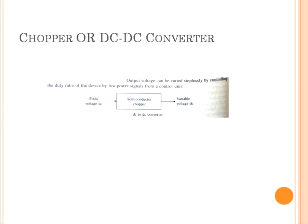Choppers or DC to DC converters are used to get variable voltage DC from a fixed voltage DC, and are designed using semiconductor devices such as power transistors, IGBTs, GTOs, MOSFETs, and thyristors. Output voltage can be varied steplessly by controlling the duty ratio of the device by a low power signal from a control unit.